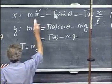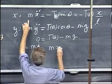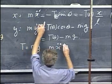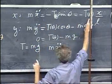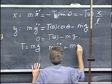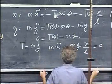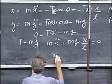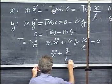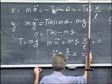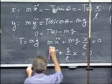I substitute this back in my equation number one. So now I get that m times x double dot, and I bring this on the other side, plus T is now mg, mg times x divided by l equals zero. And now comes the wonderful result: x double dot plus g over l times x equals zero. This is such a beautiful result that it almost makes me cry.